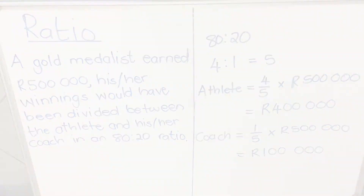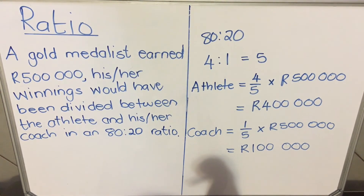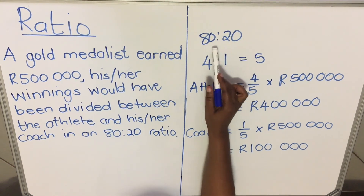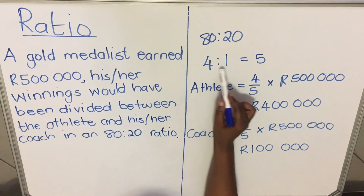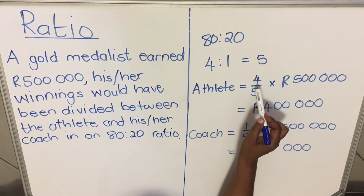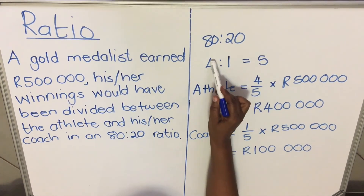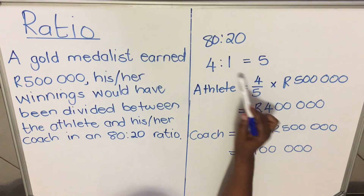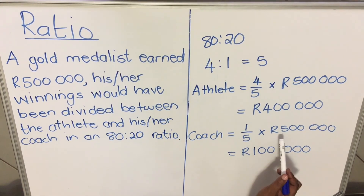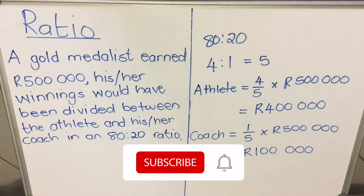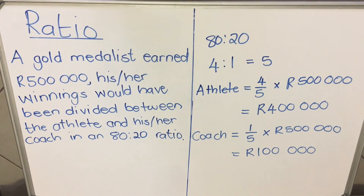Let's recap: you always need to simplify the ratio — even in your question paper they may say 'write the ratio in its simplest form', so find a number that divides both and simplify. Then add the two ratio values to get the total portions. The athlete gets 4 out of 5 multiplied by the amount, and the coach gets 1 out of 5 multiplied by the amount — that's 100,000. It's not difficult, you just need to practice. This is the end of our lesson, thank you for watching.